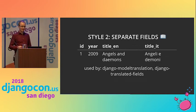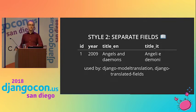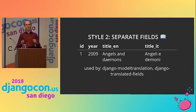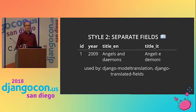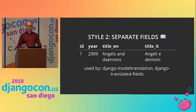A separate approach, seen in Django model translation or Django translated fields, is to just have separate columns per language. This way you don't need any joins and it's very cheap to get all languages at the same time. However, every time you add a new language, you need to do a database migration, which can be very annoying.